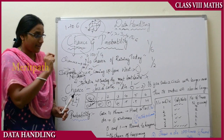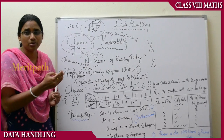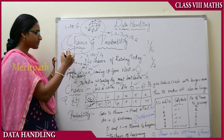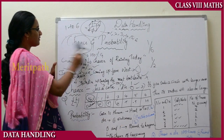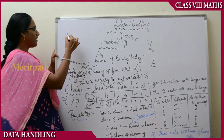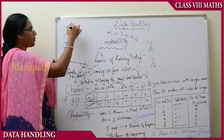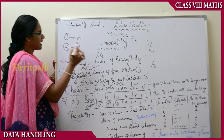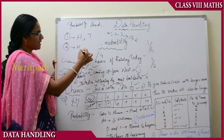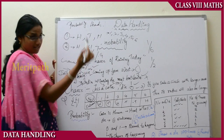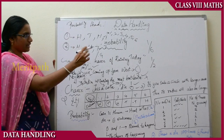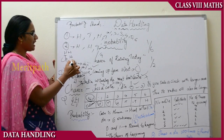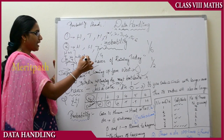I write out the die outcomes and the probability of getting each number 1, 2, 3, 4, 5, and 6. Now suppose 2 coins are tossed. The question is: what is the probability of getting 2 heads? When tossing 2 coins, the possible outcomes are: head-head, tail-head, head-tail, and tail-tail. So there are 4 possible outcomes.